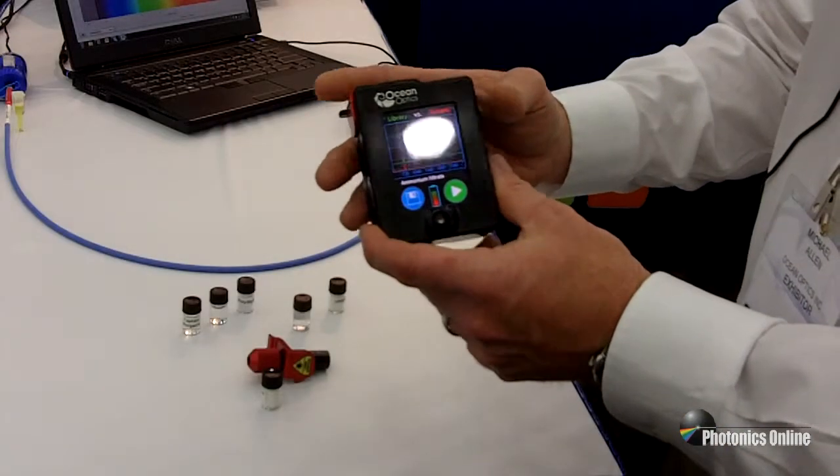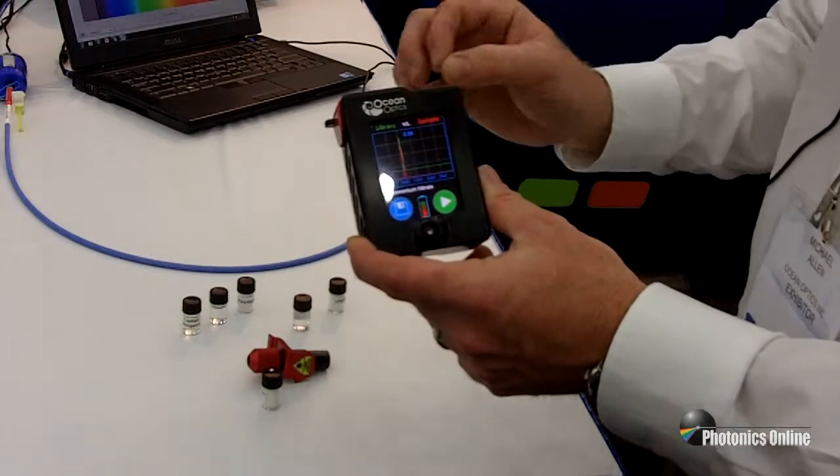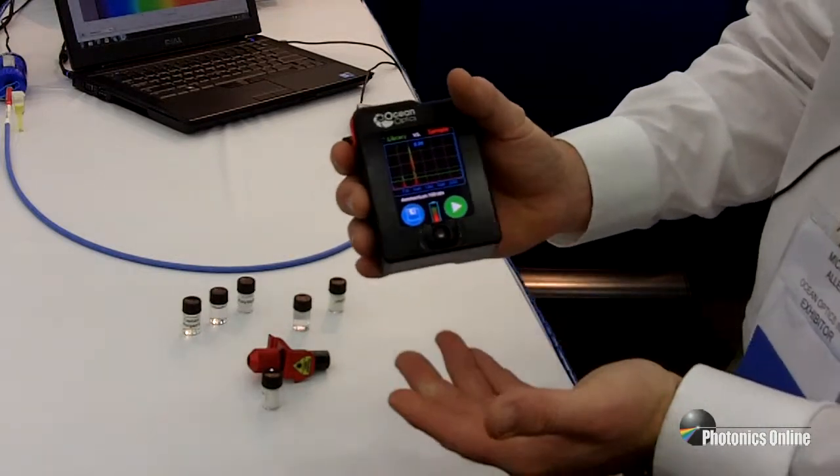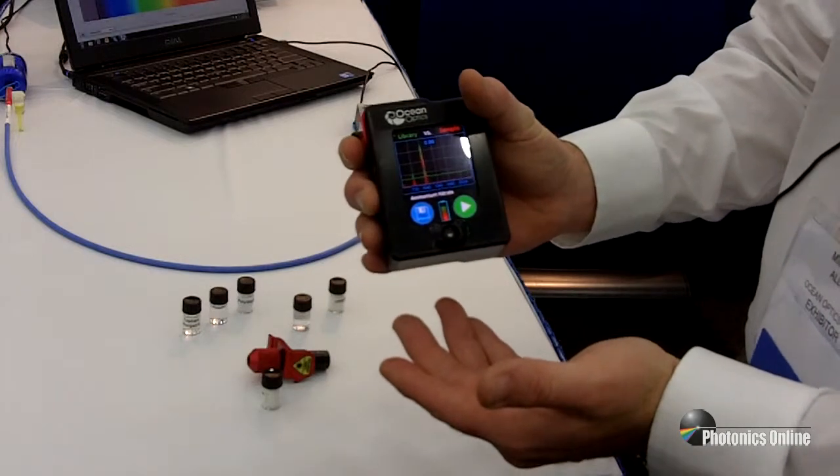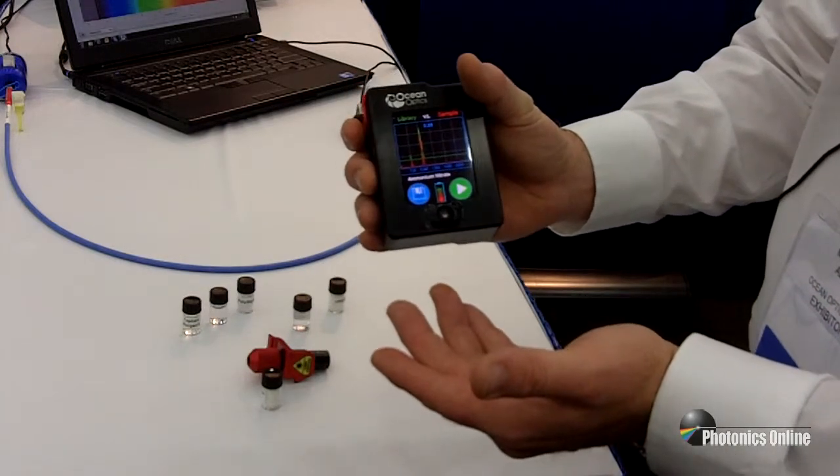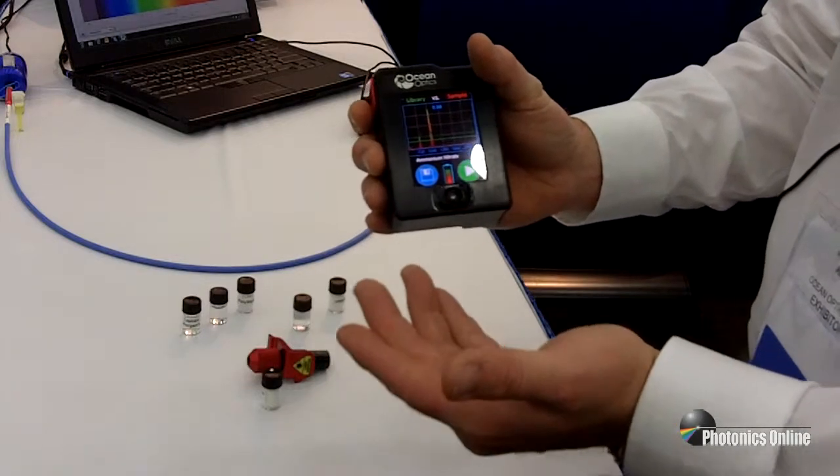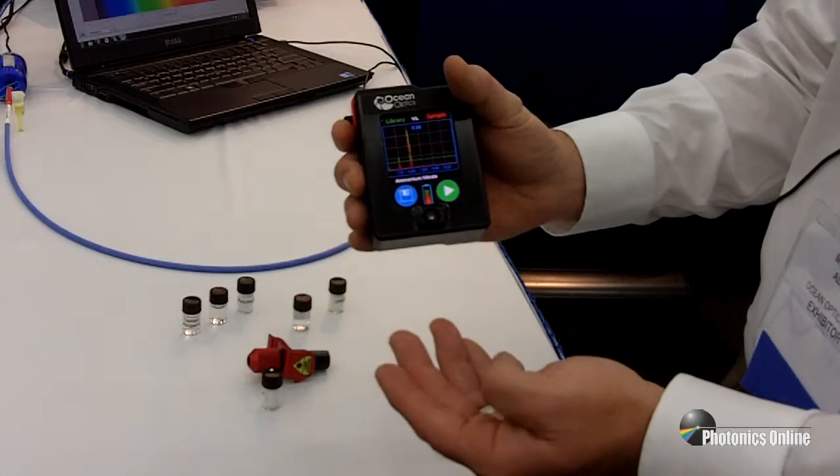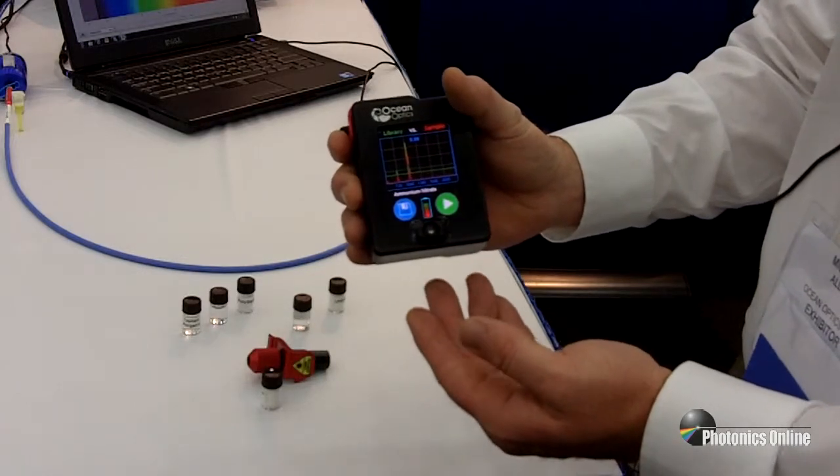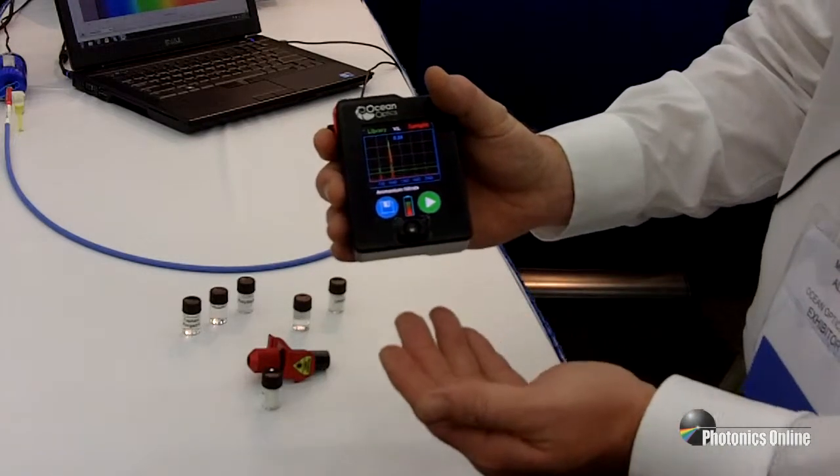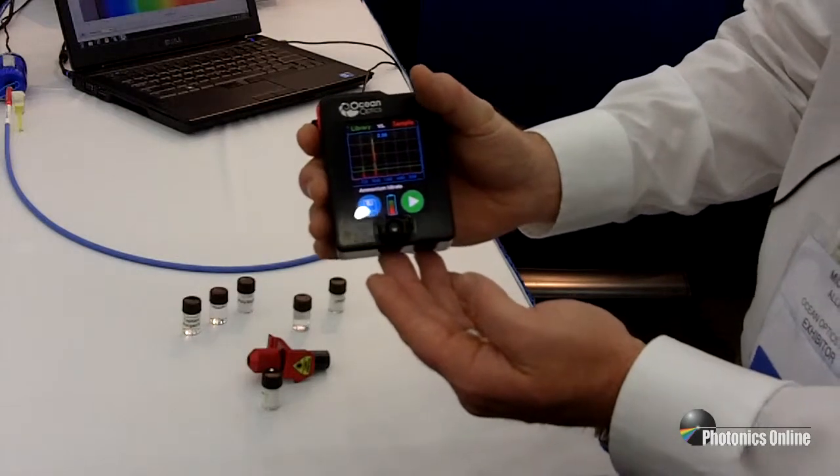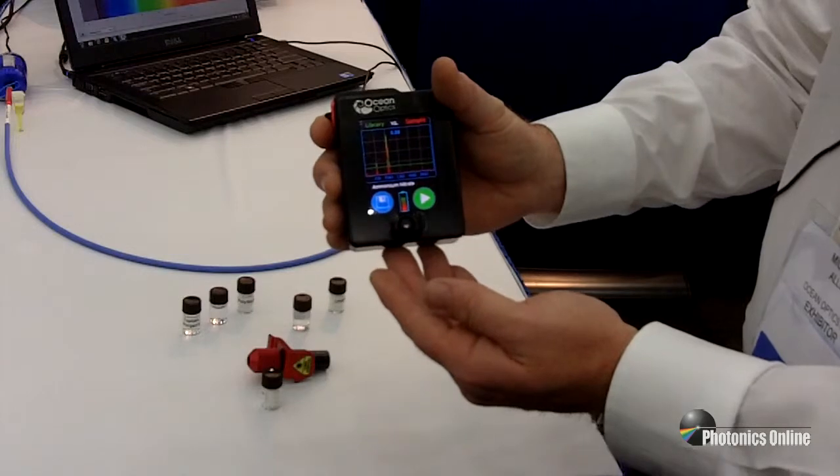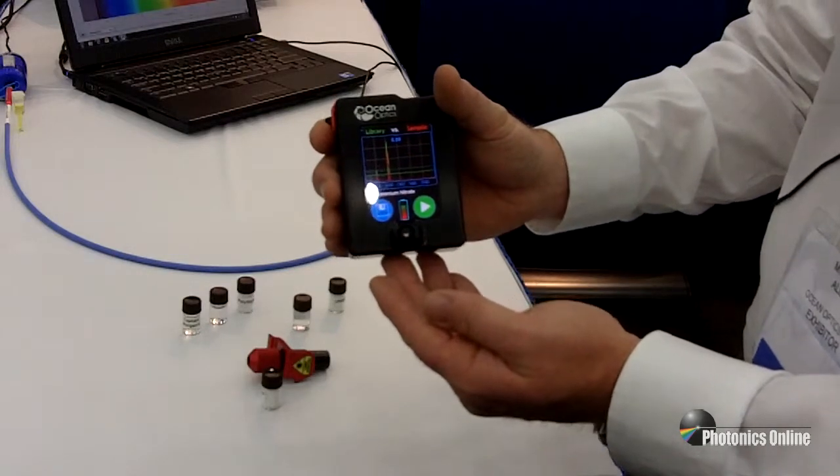The ID Raman Mini is the latest in a set of very versatile products from Ocean Optics. We're really excited about a truly handheld Raman instrument that can help you identify and authenticate samples in your laboratory. Whether it's explosives on the battlefield or incoming raw materials in your laboratory, the ID Raman Mini has many compelling features that help be useful in your lab. For more information about the ID Raman Mini, visit our website at www.oceanoptics.com.